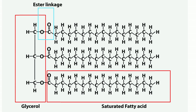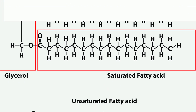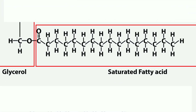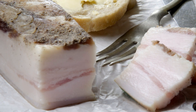When all the carbons are bound to hydrogen, you have a saturated fat. All bonds between the carbons and hydrogen are single, which creates a straight shape. Due to the straight shape, saturated fats are solid at room temperature. Examples include animal fats.